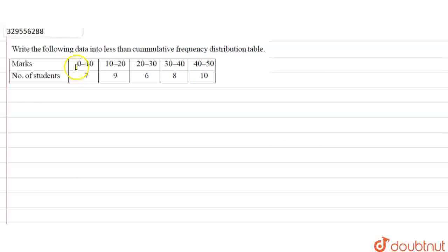Hello everyone, the question is: write the following data into a less than cumulative frequency distribution table. So basically, we have to represent this data in a less than cumulative frequency distribution table.